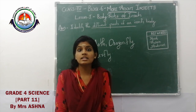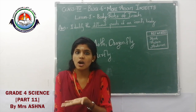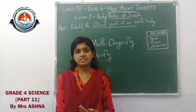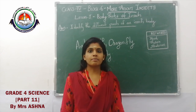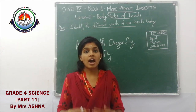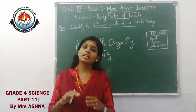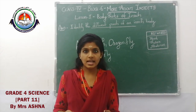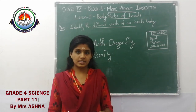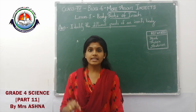Are insects similar to human beings in body parts? Yes, because we have a head and insects also have a head. We have eyes and insects also have eyes. We have legs and insects also have legs. Insects have antennae attached to the head, eyes located on the head, wings attached to the thorax, three pairs of legs attached to the thorax, and an abdomen. The body of an insect is divided into three parts: head, thorax, and abdomen.